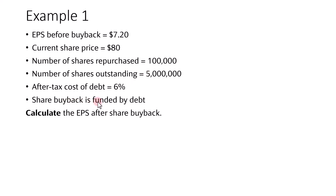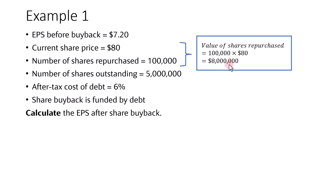The share buyback or share repurchase will be funded by debt with an after-tax cost of debt of 6%. To calculate the EPS after the share buyback, we will need to calculate the total earnings or net income and then minus the after-tax cost of borrowing. Since the company is going to buy back 100,000 shares at $80, the total value of the shares repurchased will be $8 million. If they borrow $8 million and the after-tax cost of debt is 6%, then the interest expense after tax would be about $480,000.